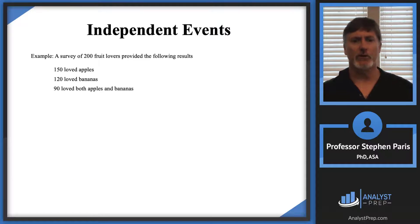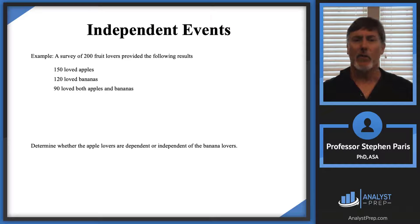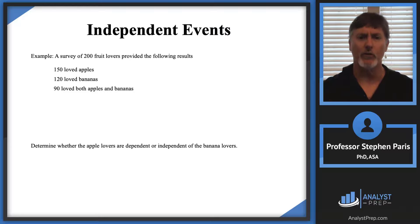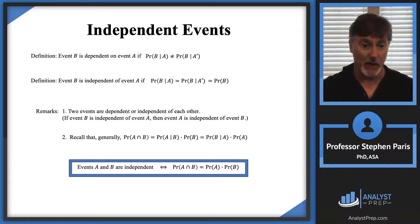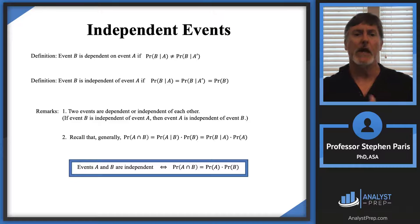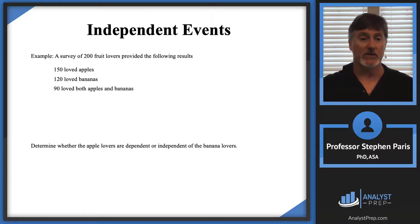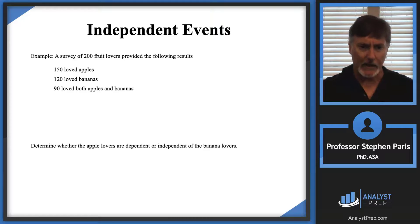So let's look at an example. A survey of 200 fruit lovers produced the following results: 150 loved apples, 120 loved bananas, and 90 loved both apples and bananas. The question is: determine whether the apple lovers are dependent or independent of the banana lovers. That's not clear to me at all — these things are not clear. You're just going to have to go through the process, which is to calculate the probability of A intersect B, then the probability of A, then the probability of B, and see whether the probability of A intersect B equals the probability of A times the probability of B.